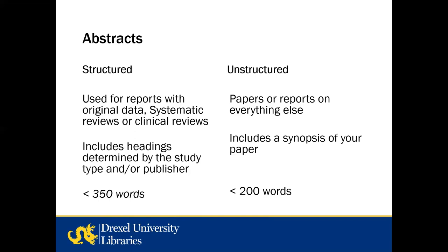Structured abstracts are usually under 350 words — that's a JAMA criterion, though I've seen them listed as fewer than 300 words. Unstructured abstracts are typically not used for reports of original data; they're used for everything else when an abstract is required. Normally they're not more than 200 words and summarize the objective or main points and conclusion. Some publishers also ask that you provide a list of eight or ten keywords addressing the document's primary concepts, but not always.